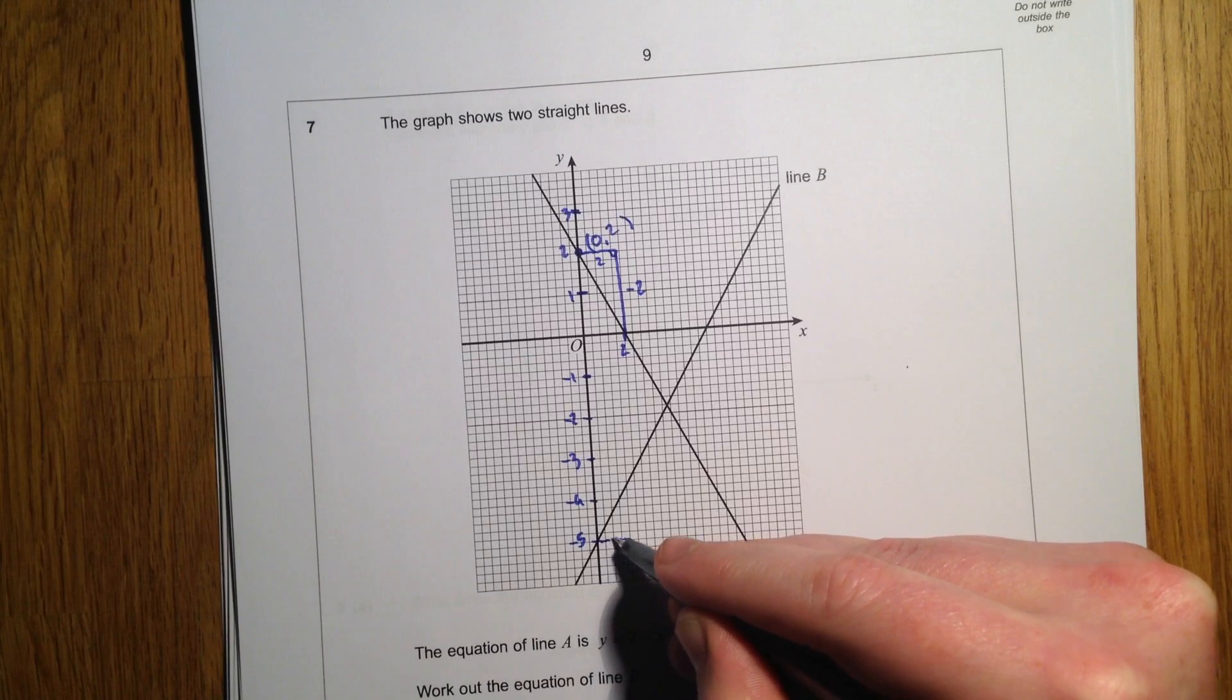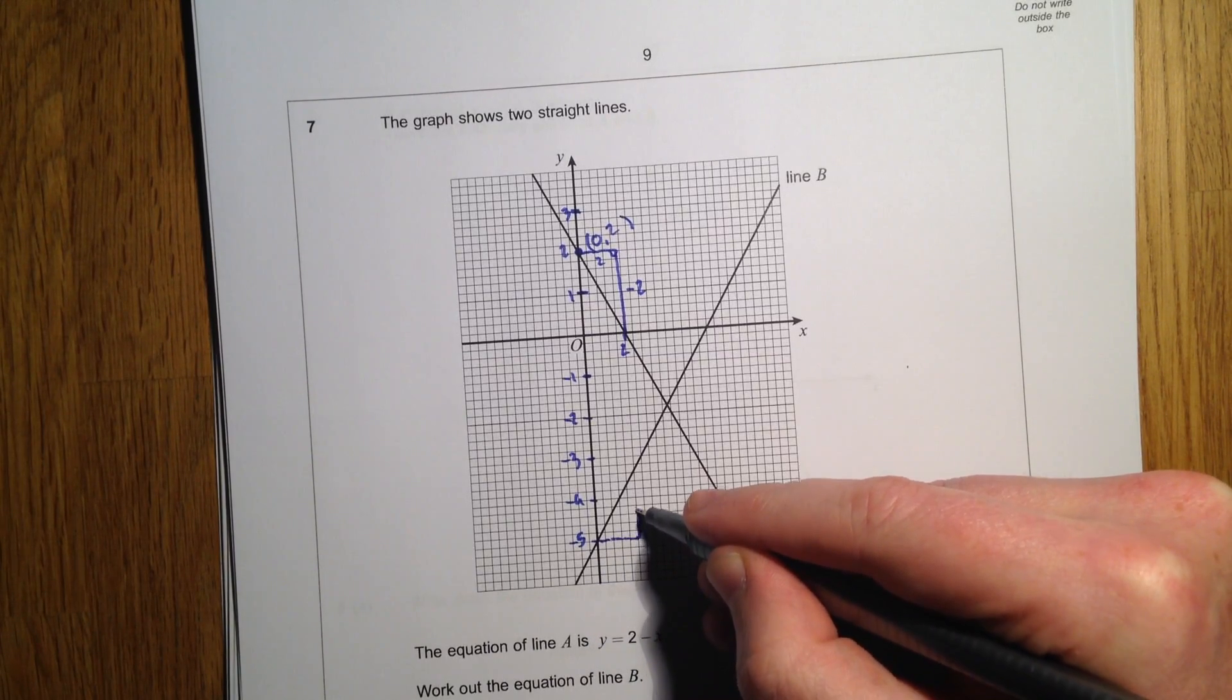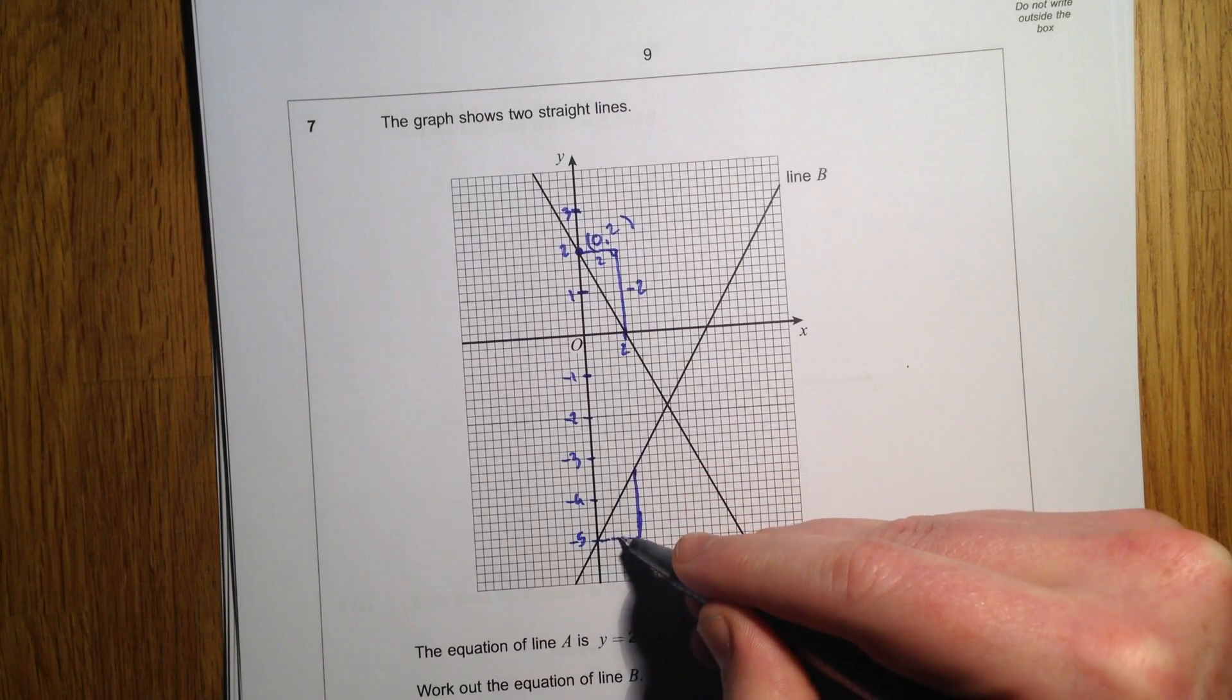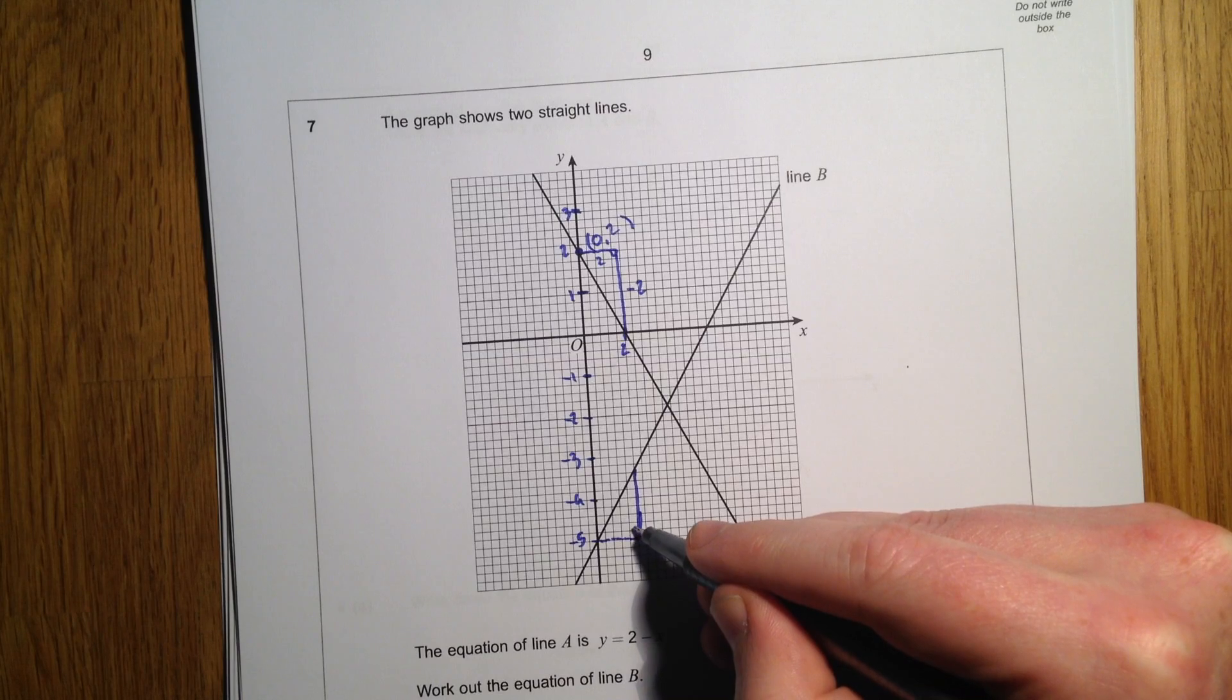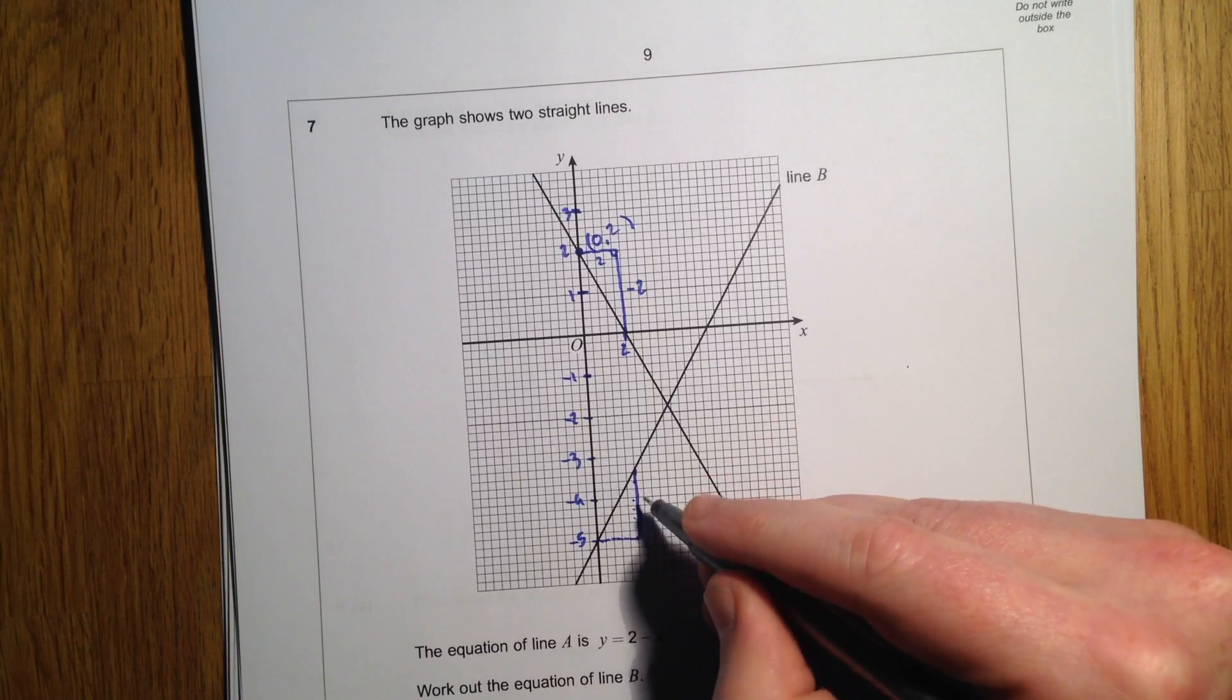And it's come down from 2 in that time. So that means this has come down minus 2, so this must have gone across 2. So 5 squares is 2, so it's going up in 2's here.